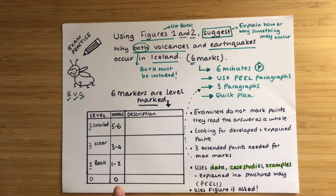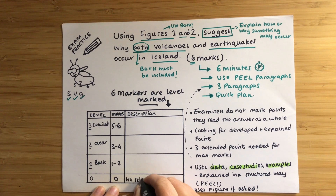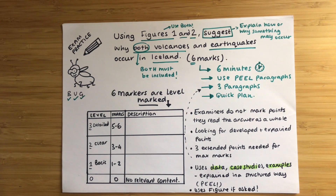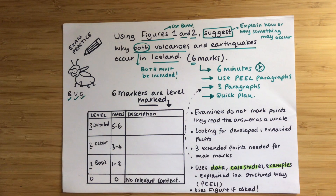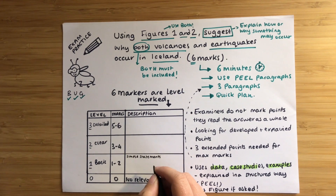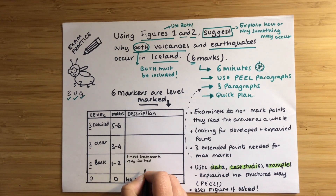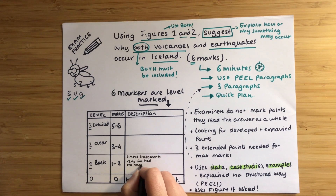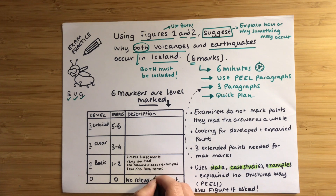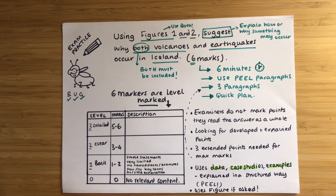Let's break down the level marking mark scheme. Level zero means there's no relevant content — this is quite difficult to get if you've written something relevant. For example, if you talked about how volcanoes in Iceland brought in tourists every year, that wouldn't be answering the question. To be awarded level one — a basic answer of one to two marks — you will have made very simple statements with a very limited answer, may not have used any named places or examples, and there are few or no key terms. There's also little or no explanation.